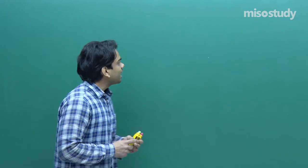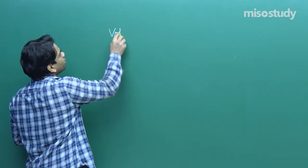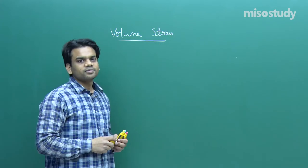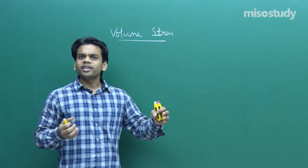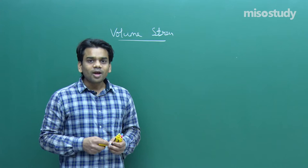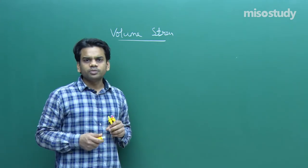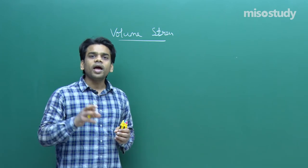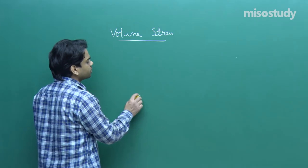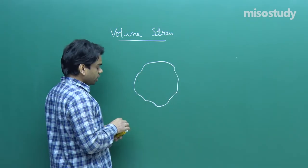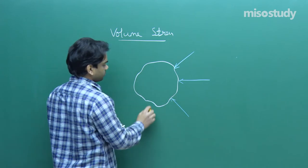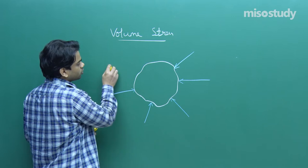Let's go ahead with today's topic: volume stress. Stress is nothing but force per unit area. Now suppose you take a small object of any shape and apply a force from all directions, such that the force acts on each part of the object perpendicular to the surface at each point. Remember, it has to be normal to the surface at each point.